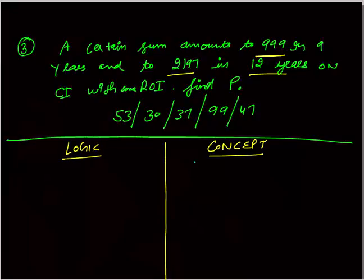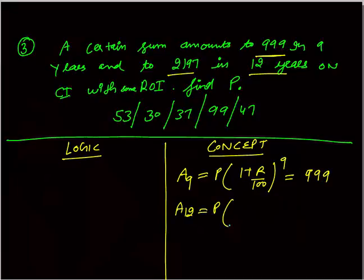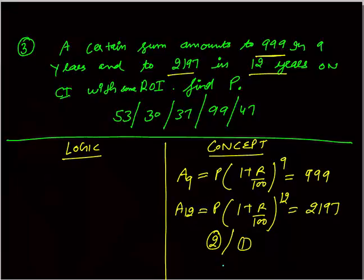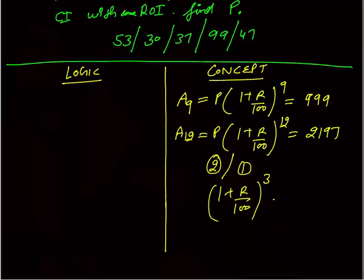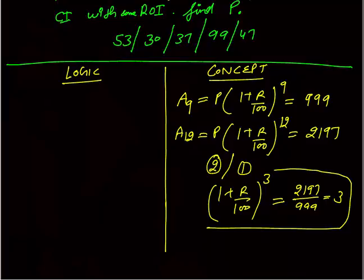Using the concept method — write minimum. A9 = P × (1 + R/100)^9 = 999. A12 = P × (1 + R/100)^12 = 2197. Dividing equation 2 by equation 1: (1 + R/100)^3 = 2197/999. Now 999 × 3 = 2997 — wait, 2197/999 simplifies to 3 since 999 × 3 ≈ 2997... actually 2197 = 13³ and 2197/999: checking — 999 × 3 = 2997, so (1 + R/100)^3 = 2197/999. This equals approximately 3, giving us (1 + R/100)^3 = 3.